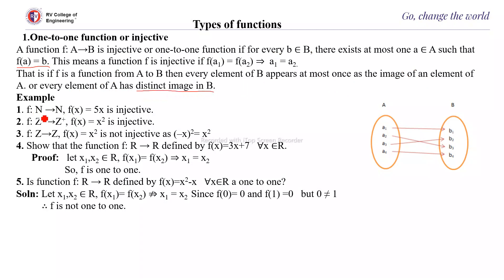Suppose f is a function from N to N with f(x) = 5x — this is injective because if f(x1) equals f(x2) then x1 must equal x2. Similarly, f from Z+ to Z+ with f(x) = x² is injective because every positive integer has a distinct square. However, f from Z to Z with f(x) = x² is not injective, since f(−x) = (−x)² = x², meaning both −x and +x have the same image.